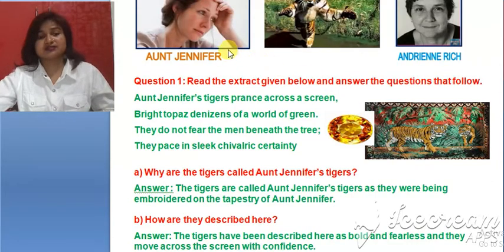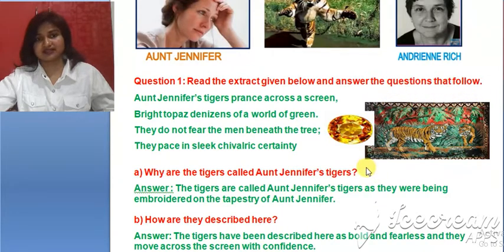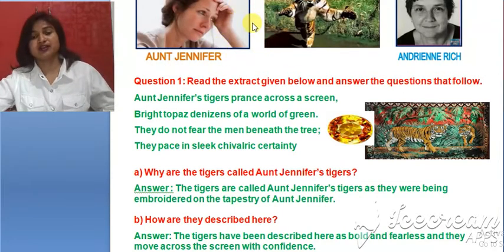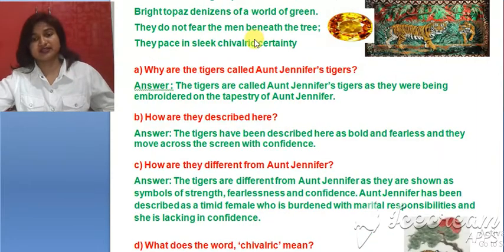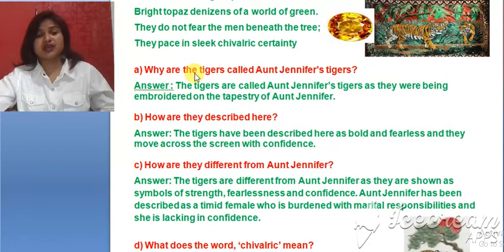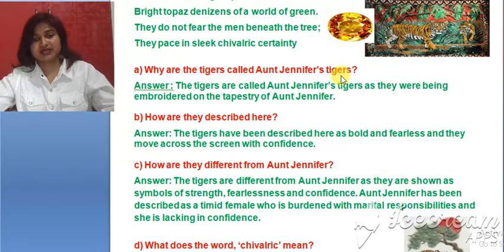Aunt Jennifer wished to live a free life like the tigers, but she was not free — she felt burdened and used to be scared of her husband.